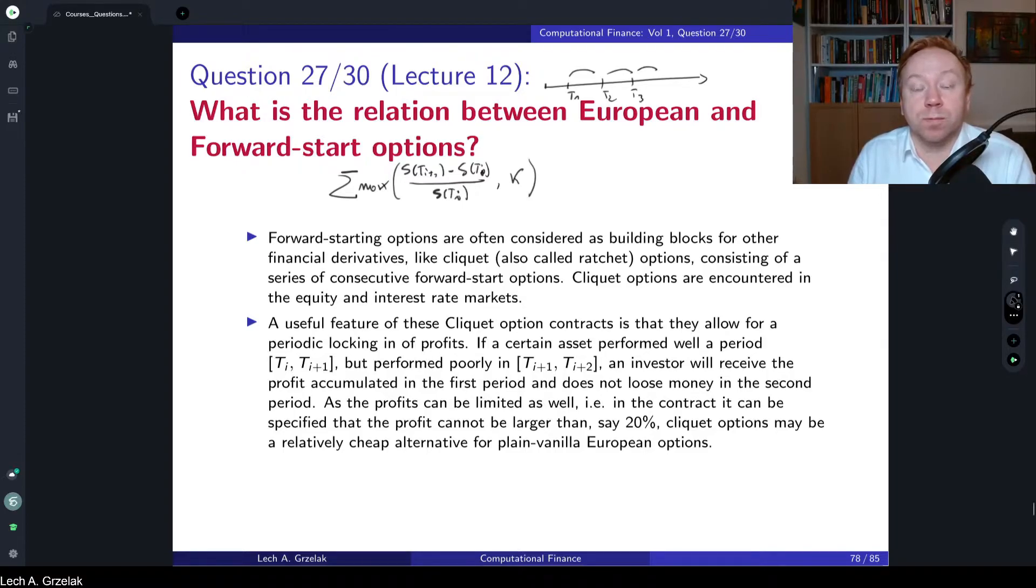If this performance option performed very well in this interval, this profit will be locked in with, of course, the minimum k. However, if this next performance happens to be negative, if the stock performs very bad, this will not bring you any loss because we always choose the maximum of the two. So it's a kind of procedure of locking in the profits over the whole period, the whole interval of time. So this is one of the building blocks.